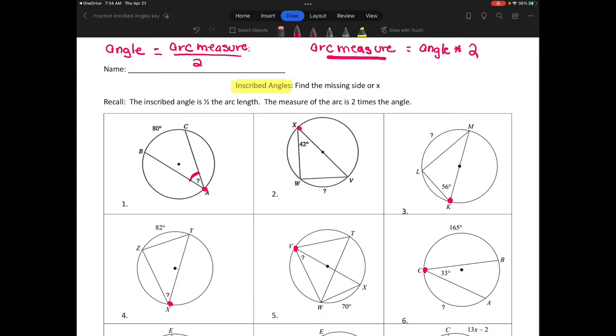For instance, in number one we're trying to find an angle, so we're going to divide the measure of the intercepted arc by two. So what would this angle be? That's correct, the angle would be 40.